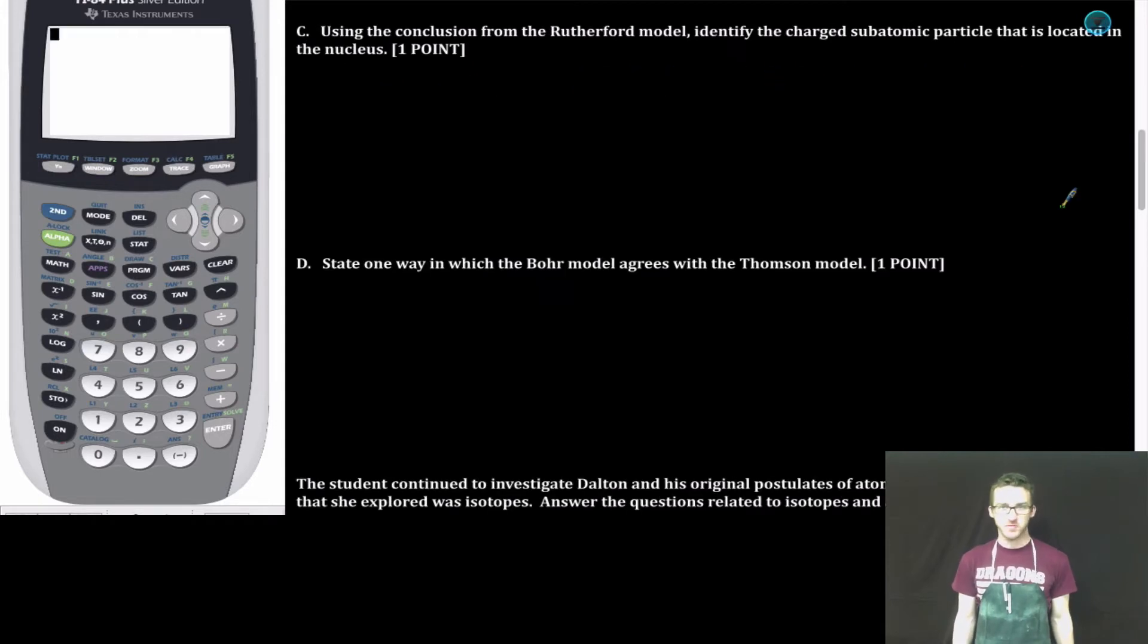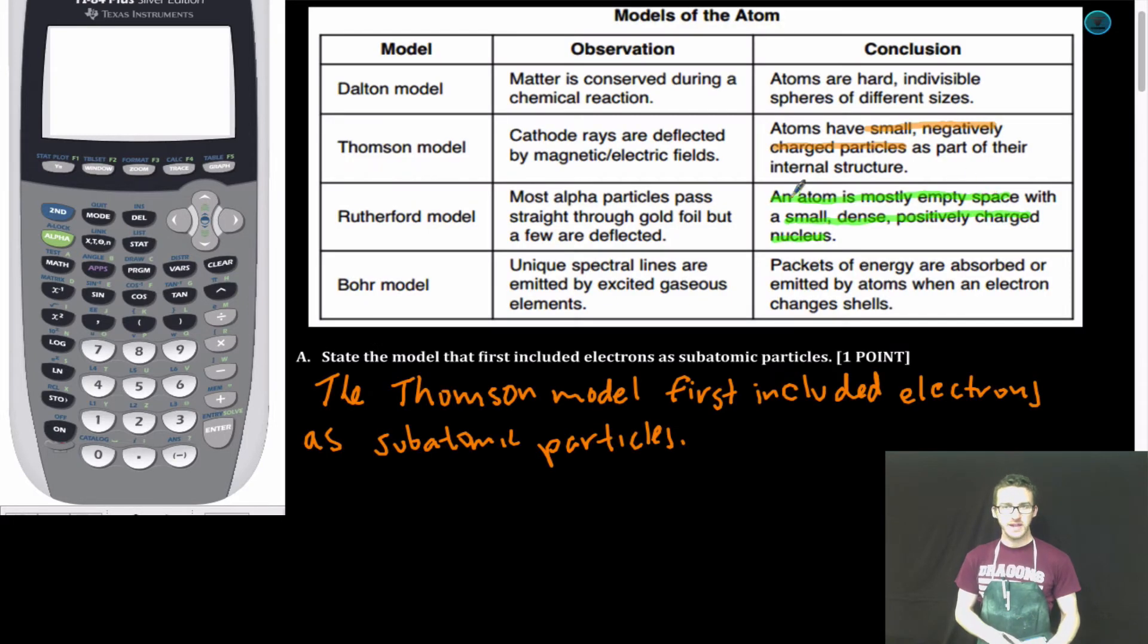Part C. Using the conclusion from the Rutherford model, identify the charged subatomic particle that is located in the nucleus. As we once again take a look at the conclusion from the Rutherford model of the atom, keep in mind that the result of this experiment was identifying the nucleus as a small, dense, positively charged region.